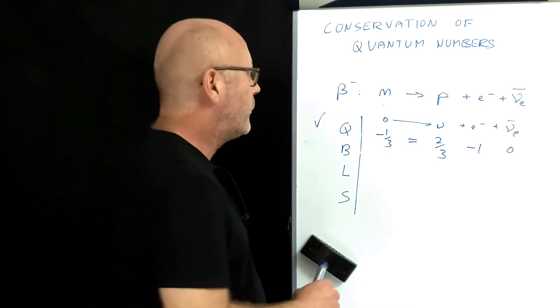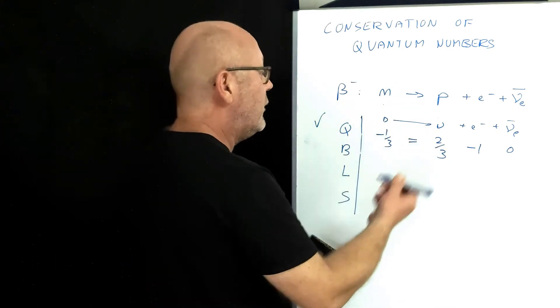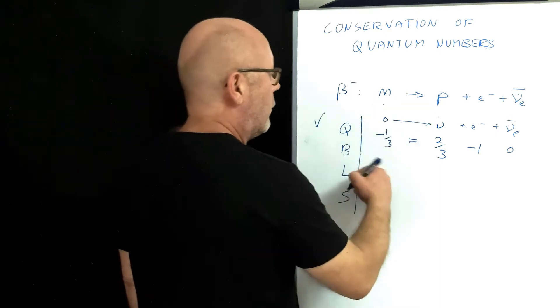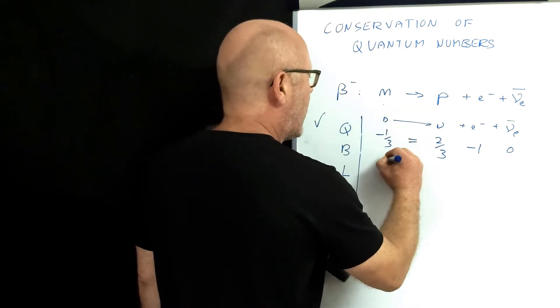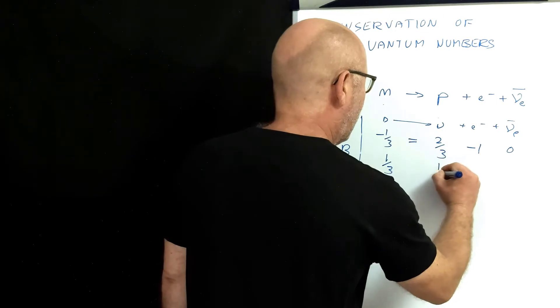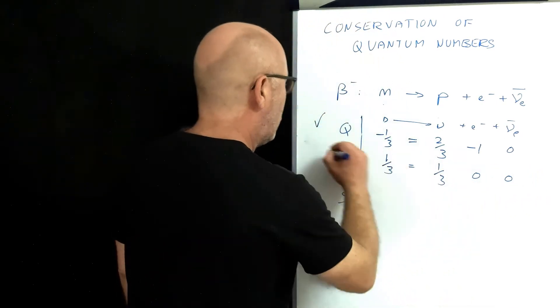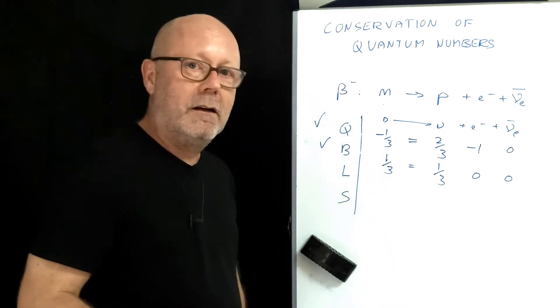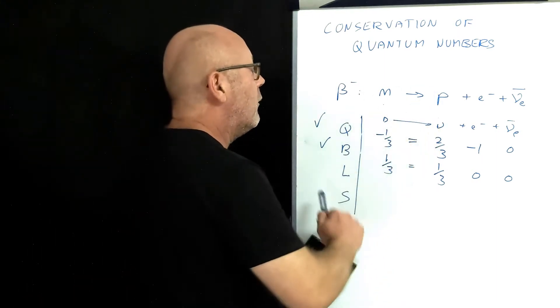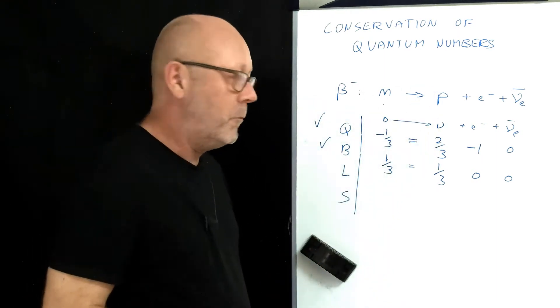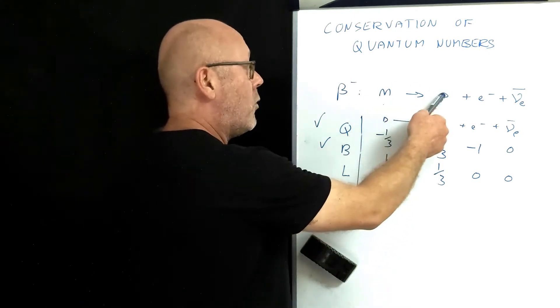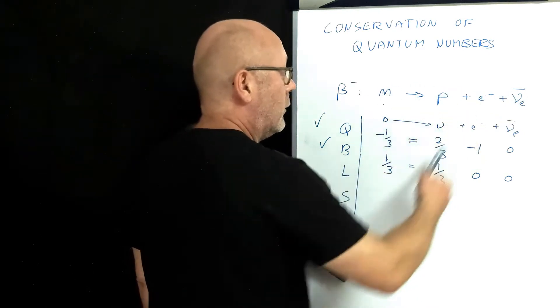Let's try the baryon number. The neutron is a baryon. I could use also the down quark. Let's use this one. Down quark has got a baryon number of one-third, the up quark of one-third, the electron is zero, the anti-neutrino of the electron is zero. It's equal to the baryon number. Check! This reaction respects the conservation of the baryon number. I could have used neutrons and protons, one and one, zero, zero. It would have worked too.